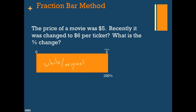The movie originally cost $5, so that's 100%. Then we will look at the new price. When the price changes, it changes to $6 per ticket, so it's going up. So we'll try to figure out what that new percentage is.